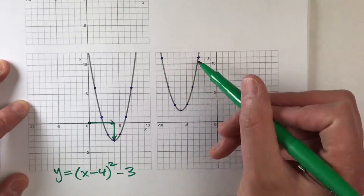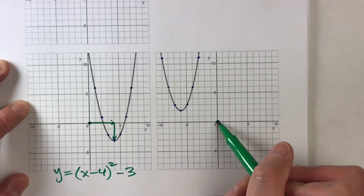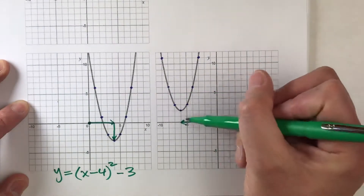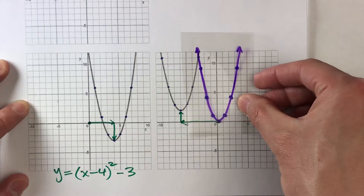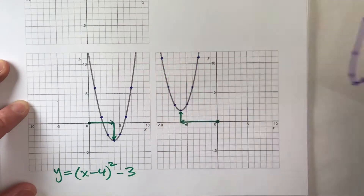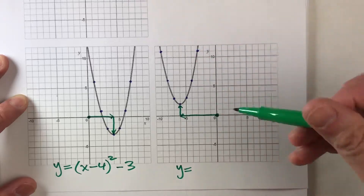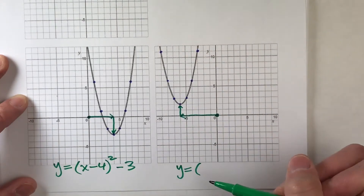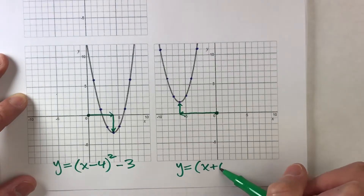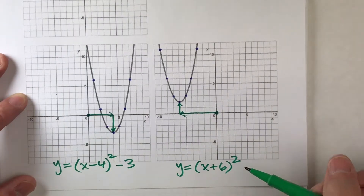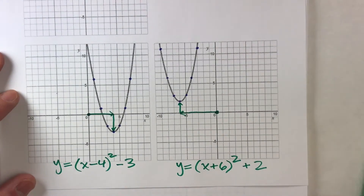Let's do another one. This one looks like the same shape and size as the original parabola, except instead of having the vertex at the origin, we've shifted to the left six units and then up two. So let's write our equation: y equals — it isn't vertically stretched at all, so we don't need a number in front of the parentheses — but we did move it to the left six units, so we're going to add six to x inside the parentheses. And we shifted it up two units, so at the end of the equation it's plus two. There's my equation for the parabola.